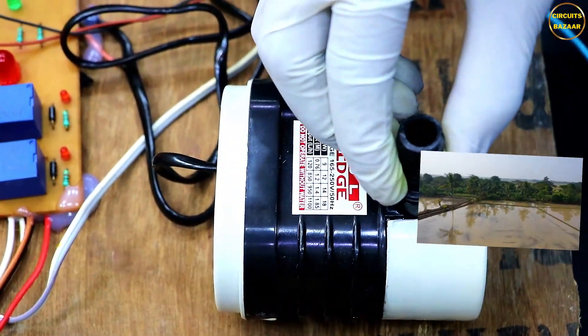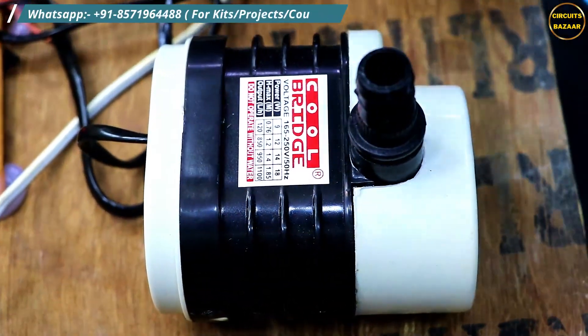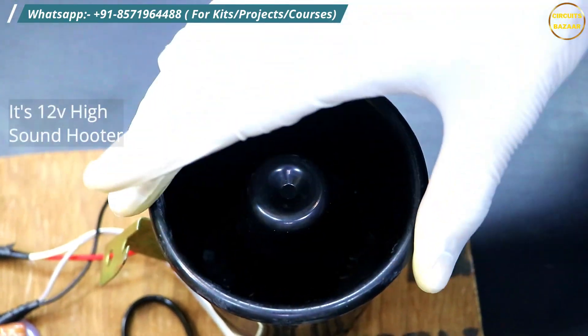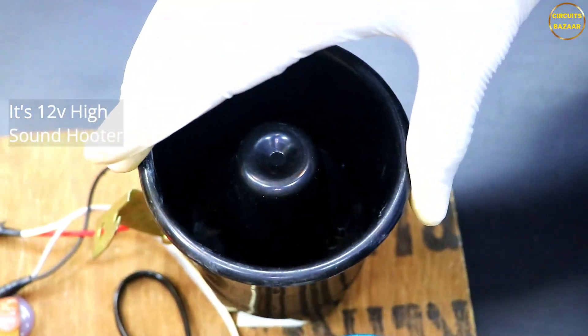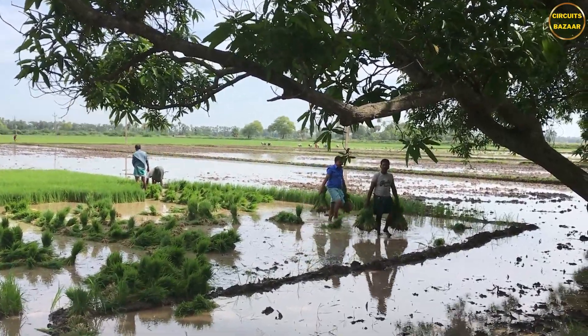This is also working on two to three volts and the big size motor will be also working on two to three volts. This is the hooter, so the farmer can turn on and off this hooter two to three times during the night time and all the animals around the field will go away by hearing such a strong sound.